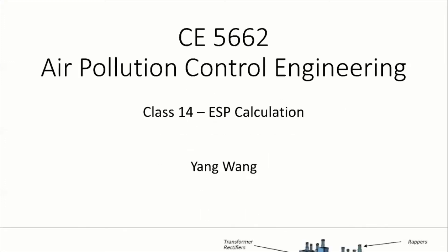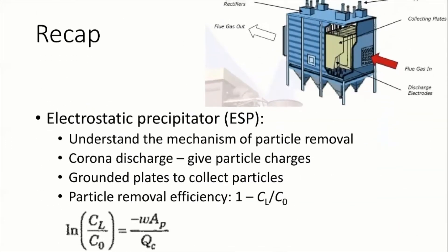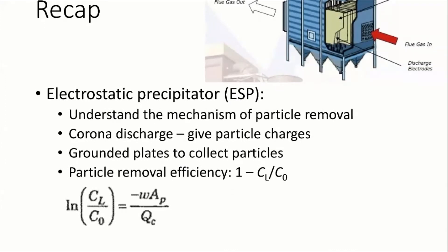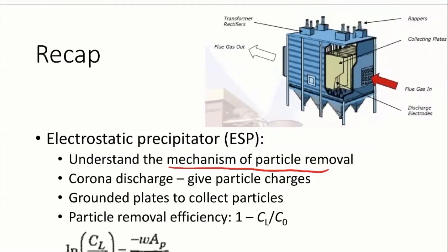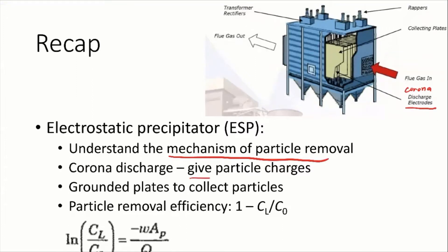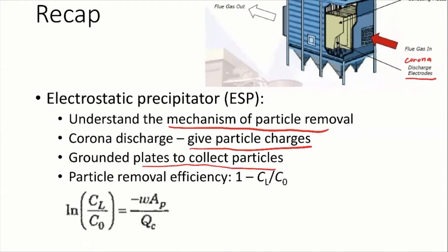Before we introduce new contents, let's do a quick recap. Last class, we mainly introduced the mechanism of the ESP. The way it works is we're going to charge the particles with these very thin wires — called the discharge electrodes or the corona discharge electrodes. These are connected to high voltage, which ionizes the air flowing by. If we generate these highly concentrated ions, they can charge the particles and then let the particles get collected onto the plates. The corona discharge gives the particles charges, because under natural conditions, not a lot of particles are charged with ions. The grounded plates collect the particles.